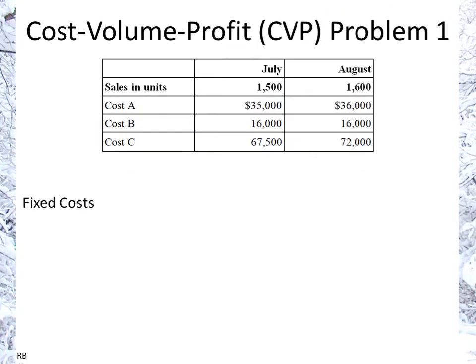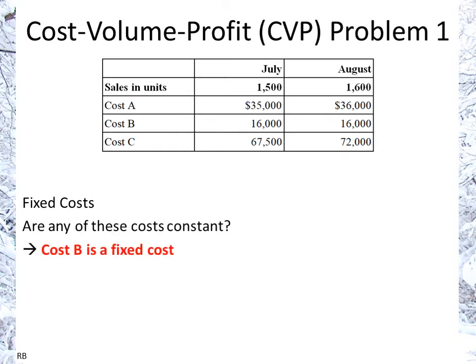For fixed costs, we simply need to look at this and ask ourselves: are any of these costs constant? And as you can see, B is a fixed cost because here we have two different values for number of units — 1,500 and 1,600 — and B has the same cost. That's not the case for A or C. So B is the fixed cost.